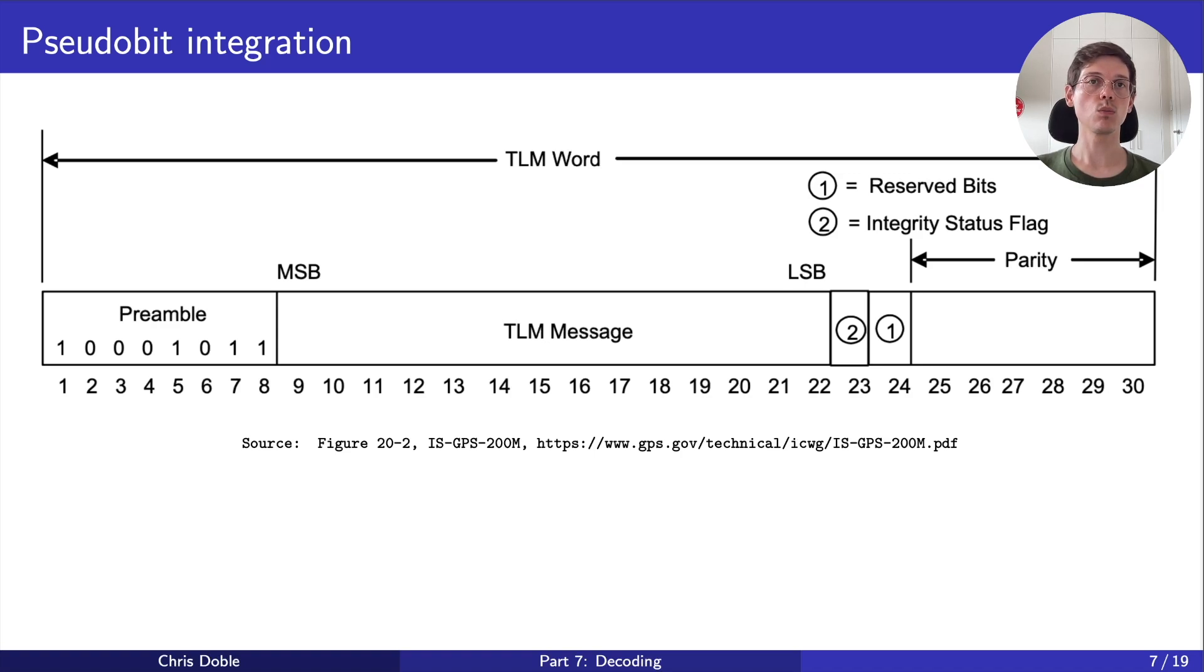To do this, we first collect several subframes worth of pseudo-bits. Then, we look for instances of the preamble, and its inverse, separated by the subframe length of 300 bits. This ensures we're actually matching the preamble at the start of subframes, and not random bits that happen to match.